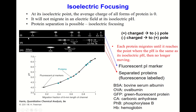Positively charged species move toward the negative pole, and negatively charged proteins move toward the positive pole. When a protein reaches the region where the pH equals its isoelectric point — say pI 4.0 — it becomes neutralized and stops moving.